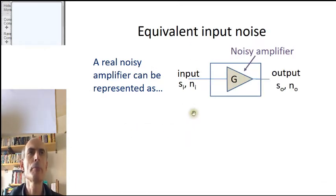Any real amplifier, when given an input signal of Si for input and an input noise level of Ni, will produce an output signal level of So and an output noise level of No. Some of that output noise will be generated by the amplifier itself.